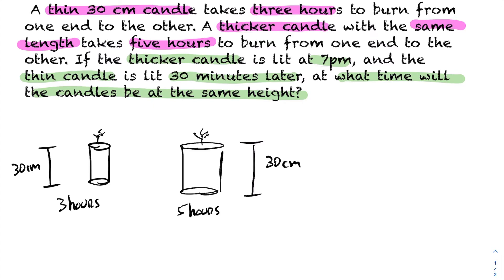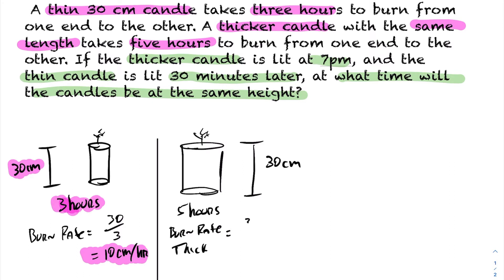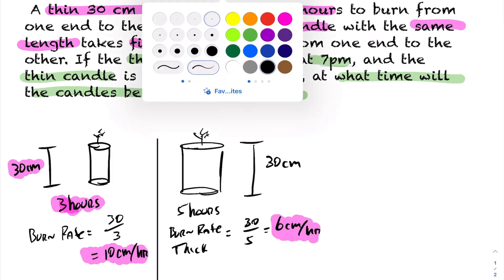Before we get into that, we need to use these two pieces of information to calculate what's called the burn rate. If a 30-centimeter candle takes three hours to burn down, that means it's burning at 10 centimeters per hour — so every hour the thin candle loses 10 centimeters of length. Likewise, for the thicker candle: 30 centimeters over five hours gives a burn rate of six centimeters per hour.